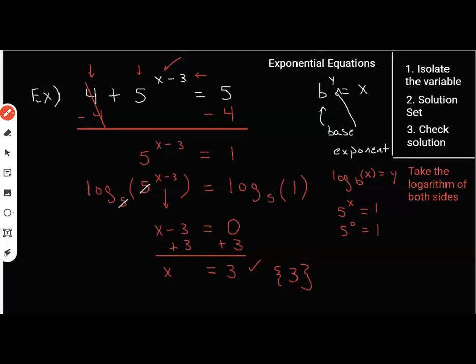In our last video, we were solving exponential equations, and I found out that the answer for this one is 3. I have 4 plus 5 to the x minus 3 power equals 5, so we're trying to figure out what x is.